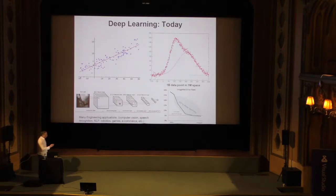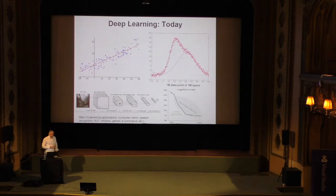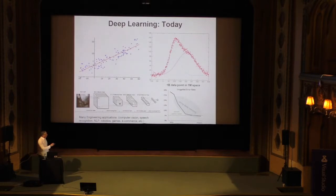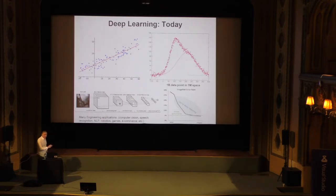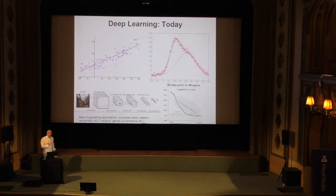Using deep learning methods today, on many specific problems, particularly in computer vision, we're getting performance that is better than humans. This is ImageNet — humans are about 5% error rate, and now we're at 4.5% or something like that. I assume you're all familiar with this, and what we're going to do now is apply these techniques to some biological data. I'm going to show you some examples from my own lab, but there is much more out there of course.